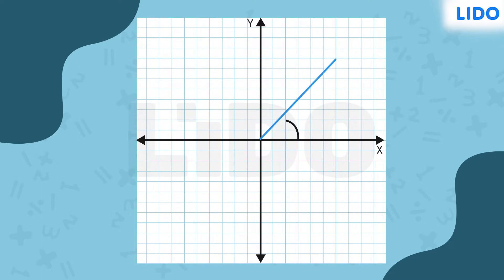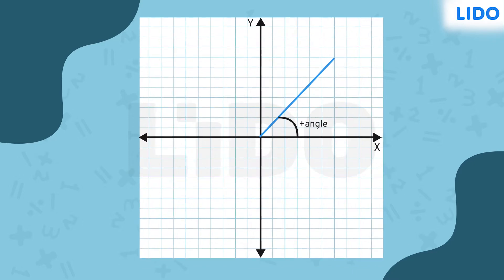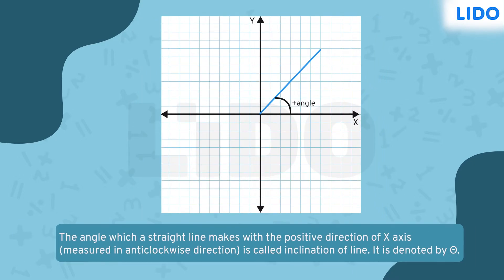The angle is always measured from the positive direction of x-axis. The angle which a straight line makes with the positive direction of x-axis is the inclination of a line. It is denoted by theta.